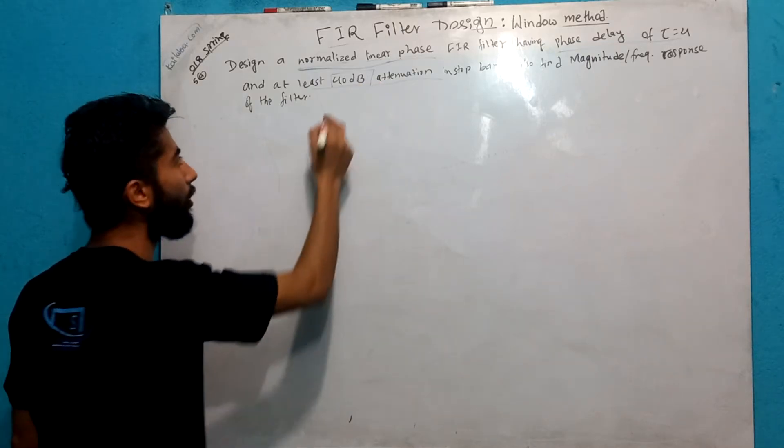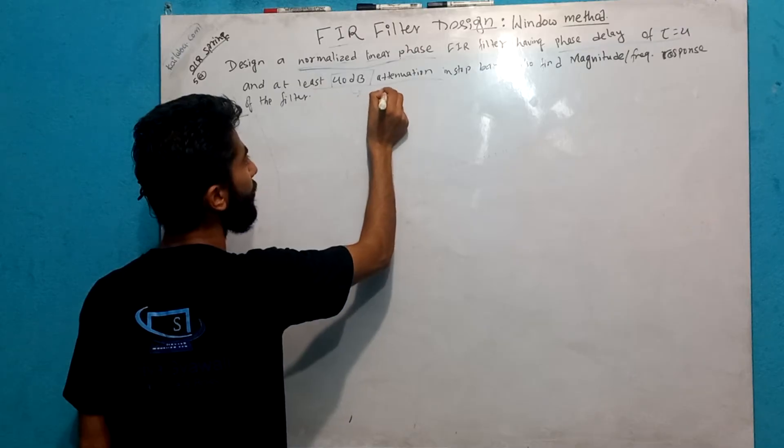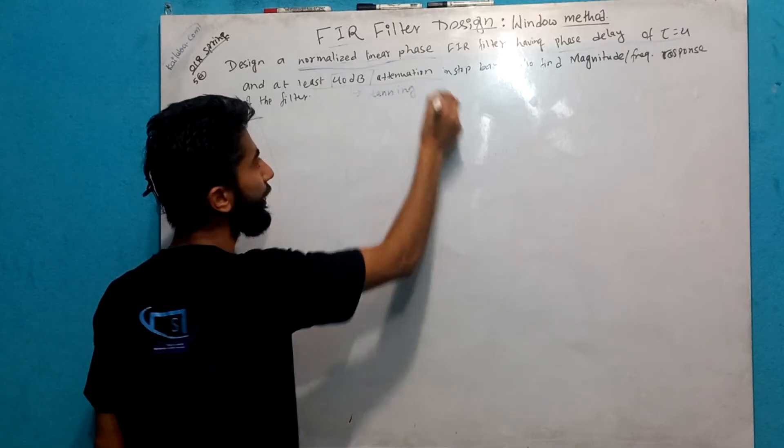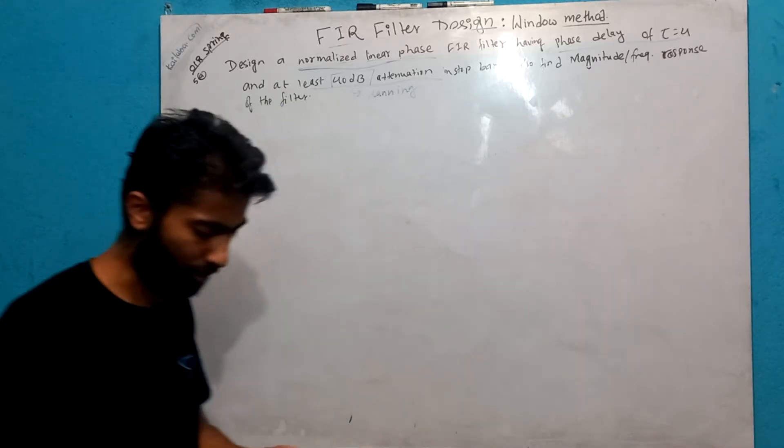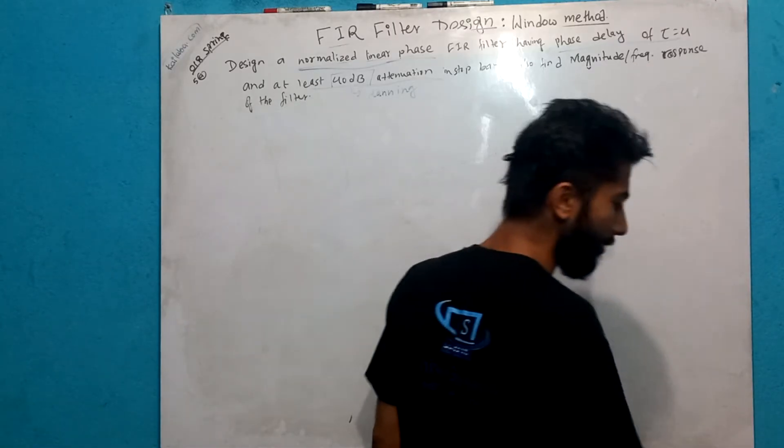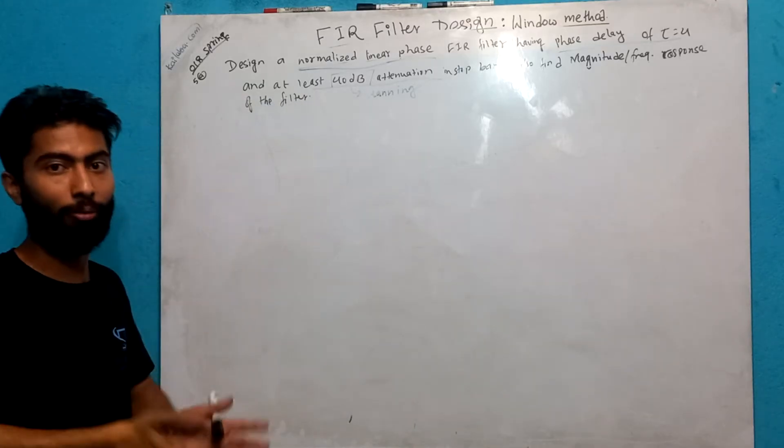If you know that 40 dB, you will know that this is the Hamming window. So this is about the Hamming window. And we are finding the magnitude and frequency response. I have seen this magnitude and frequency response for the first time.